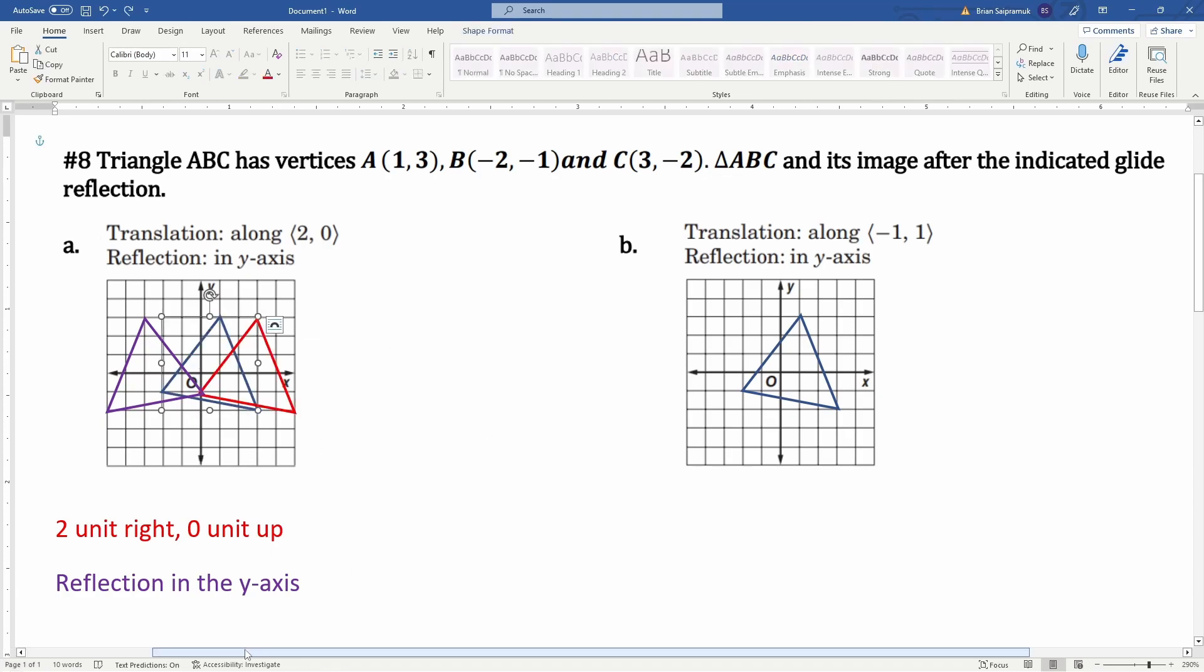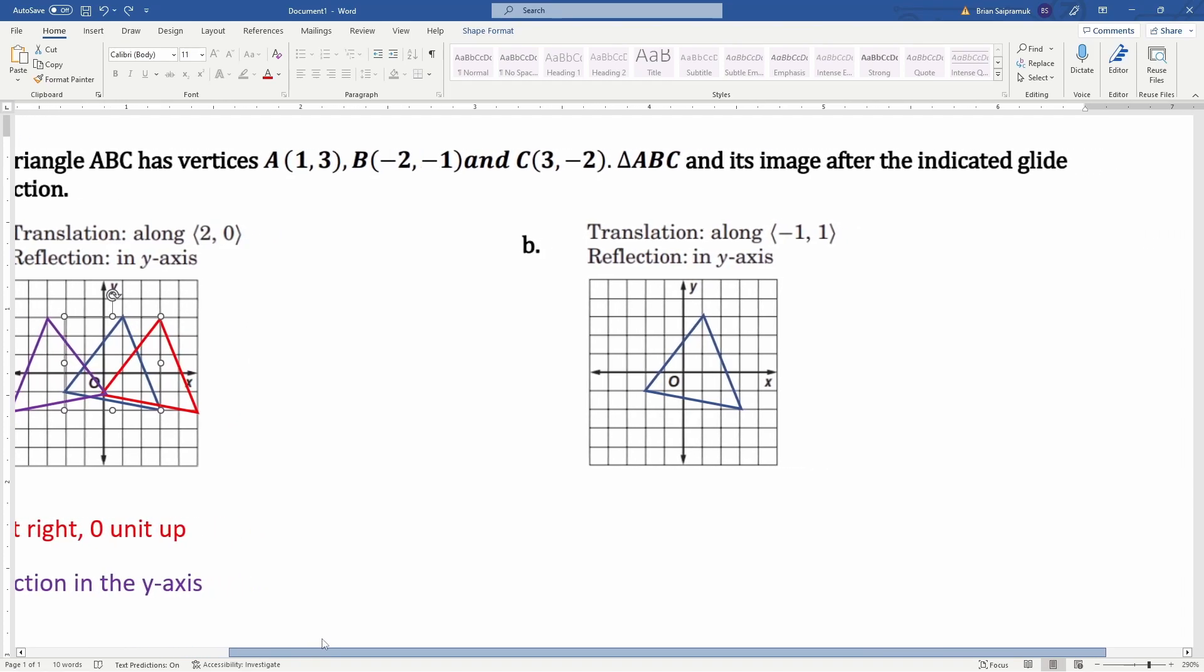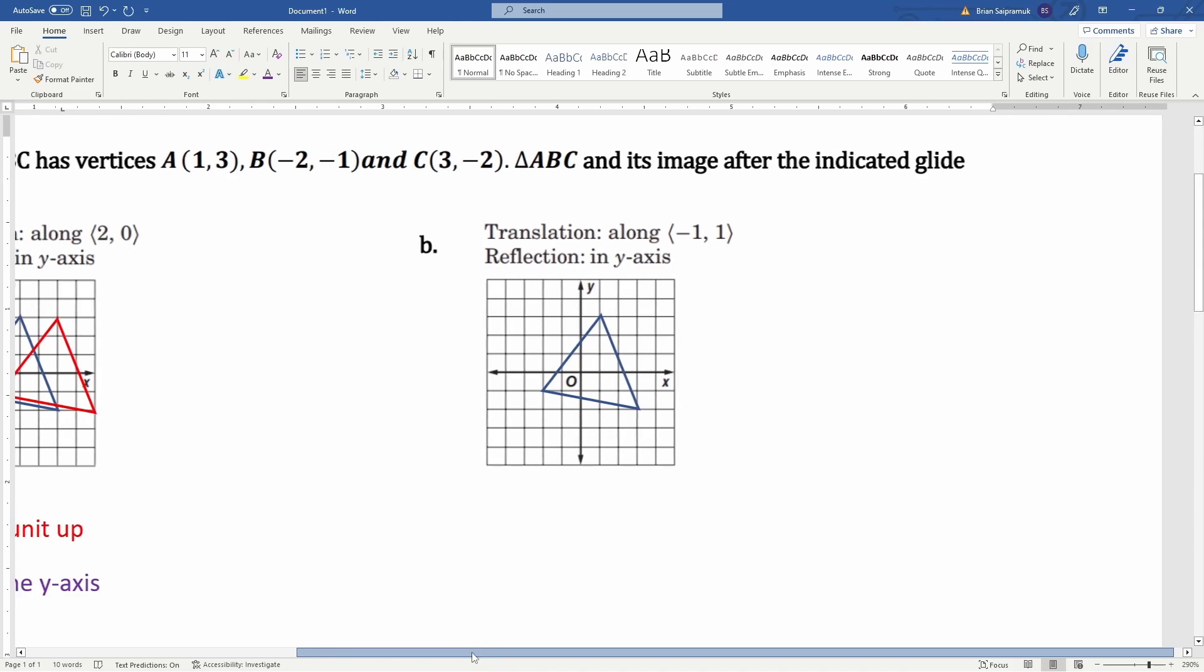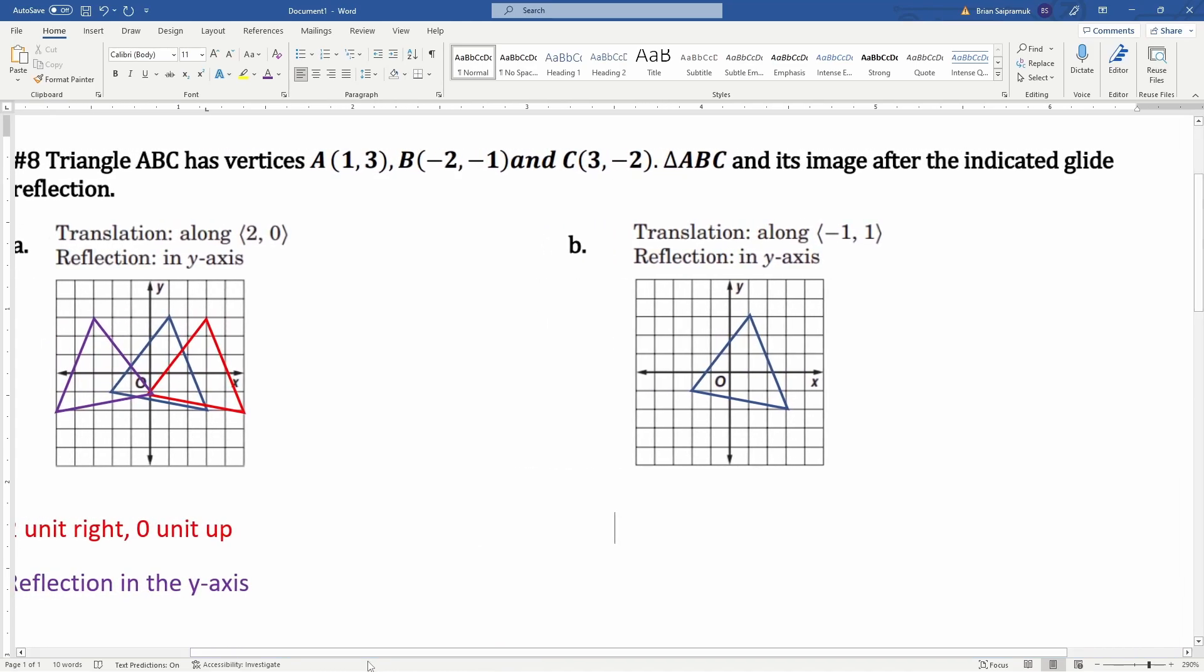The next one, part b, is a translation of (-1, 1) in its vector, so it's one unit left and one unit up. Then lastly, it's going to be a reflection over the y-axis.